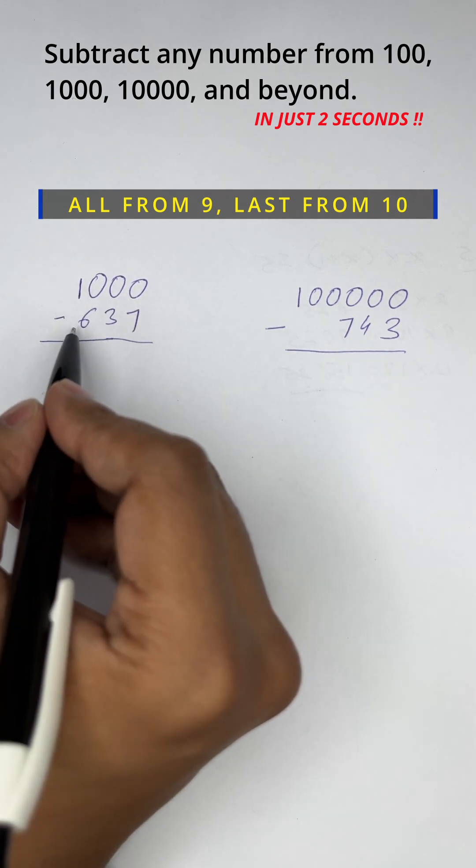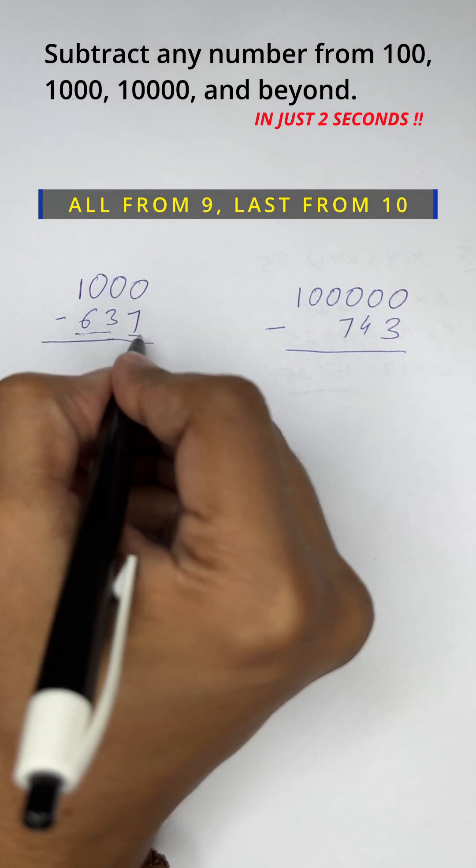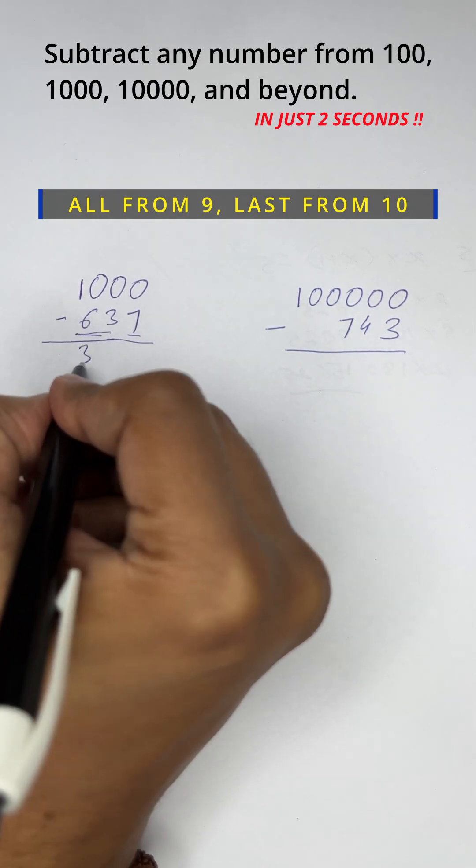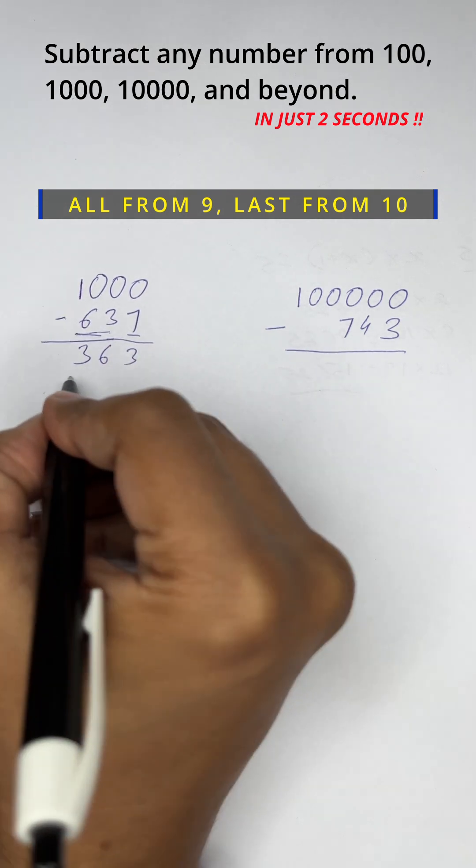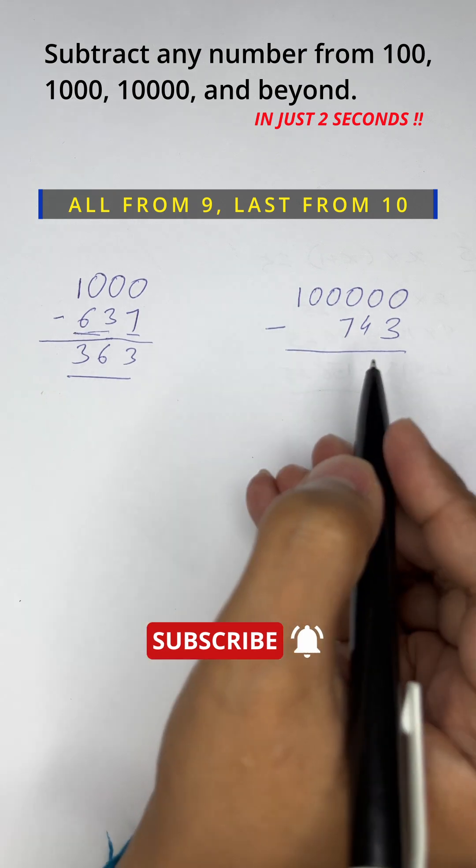All from 9 and last from 10. So let's subtract these from 9: 9 minus 6 is 3, 9 minus 3 is 6, and 10 minus 7 is 3. So the answer is 363. Let's try another one.